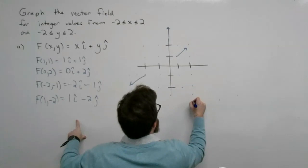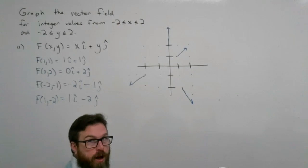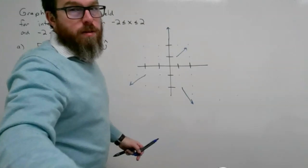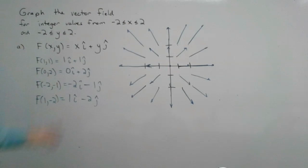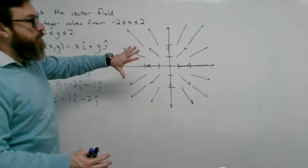I'm going to graph a bunch more vectors and fill out this field to save time. When I fill out all the vectors for this vector field, we see that it looks like that explosion field — vectors radiating outward from the center.